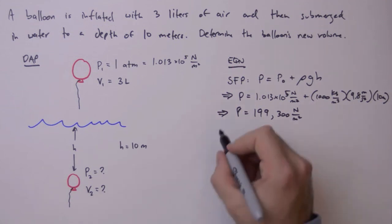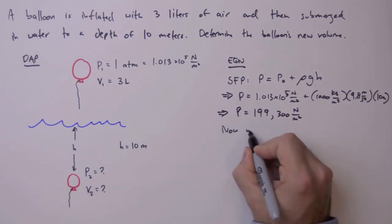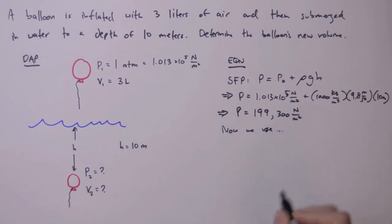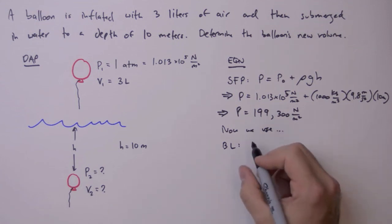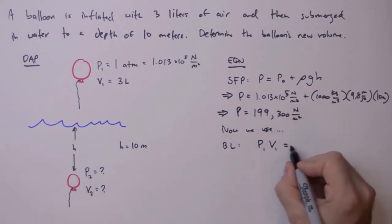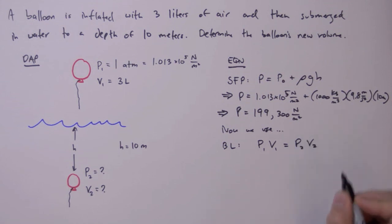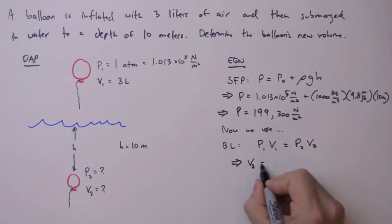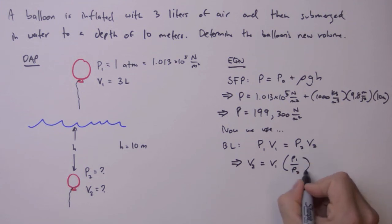Now what we're going to do is use Boyle's law to determine the new volume of our balloon. Boyle's law states that the product of pressure and volume is constant. So, here we're looking for V2, so V2 is equal to V1 times P1 over P2.